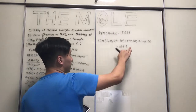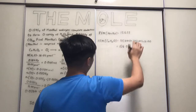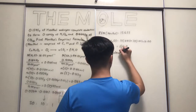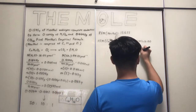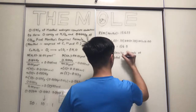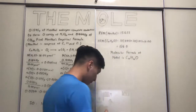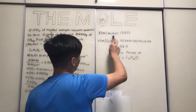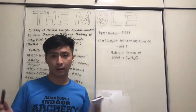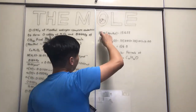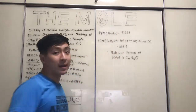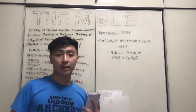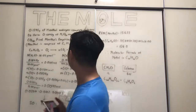Since the calculated relative formula mass of the empirical formula matches the actual RFM of menthol, the molecular formula of menthol is C10H20O — the same as its empirical formula. Not all questions will be like this; sometimes the relative formula mass of a compound might be double the RFM of its empirical formula, in which case you multiply all the ratios by two to get the correct number of atoms in the molecular formula.